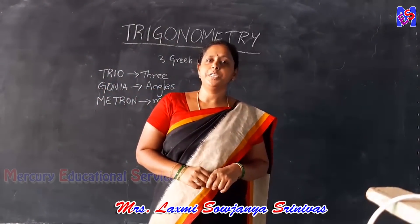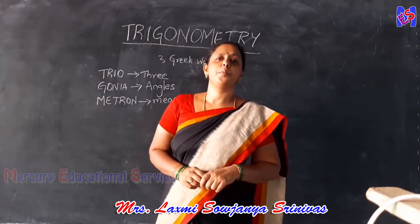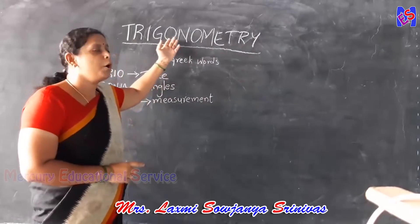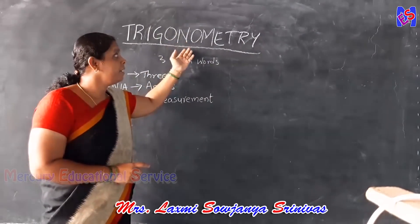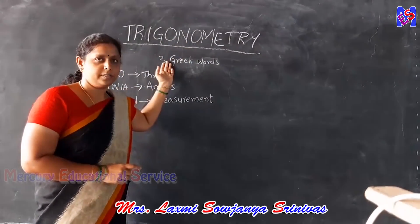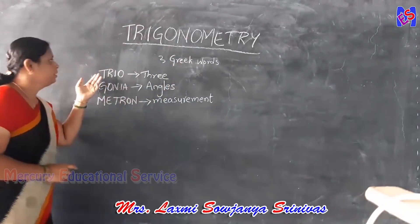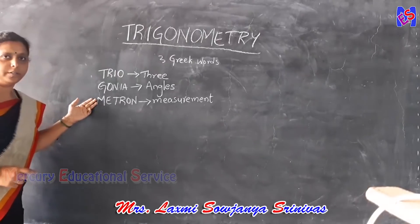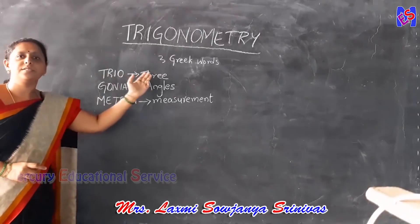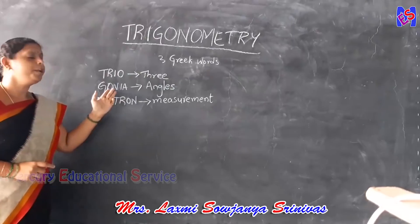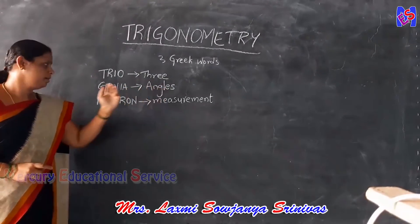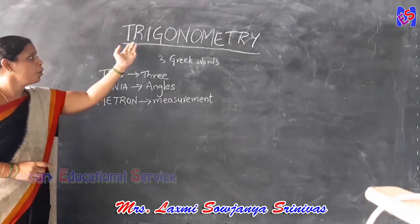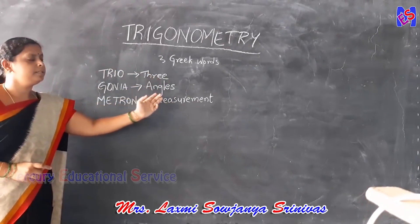Today, I am going to teach about the unit Trigonometry. Trigonometry is a word derived from three Greek words: Trio, Gordia, and Metron. Trio means three, Gordia means angles, and Metron means measurement. So Trigonometry means three angles measurement.